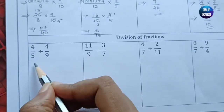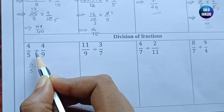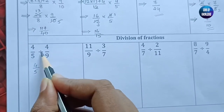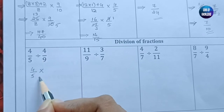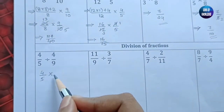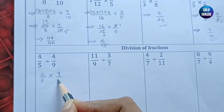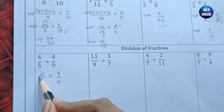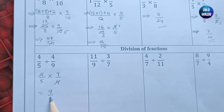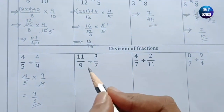Now the last part: division of fractions. Fractions cannot be divided as they are. Instead, change the division sign to multiplication and reverse the second fraction. For the first problem, 4/9 becomes 9/4, so you can cancel the 4s, giving 9/5 as the answer.